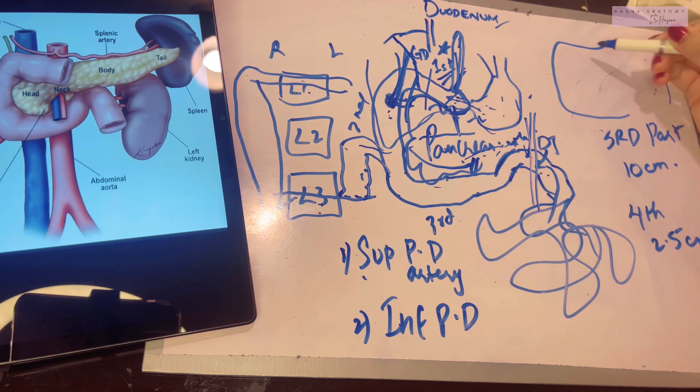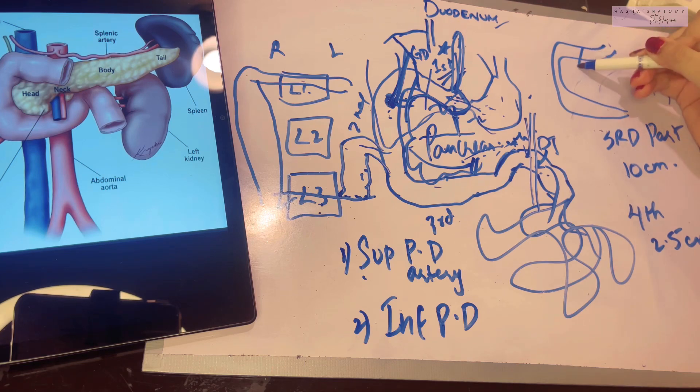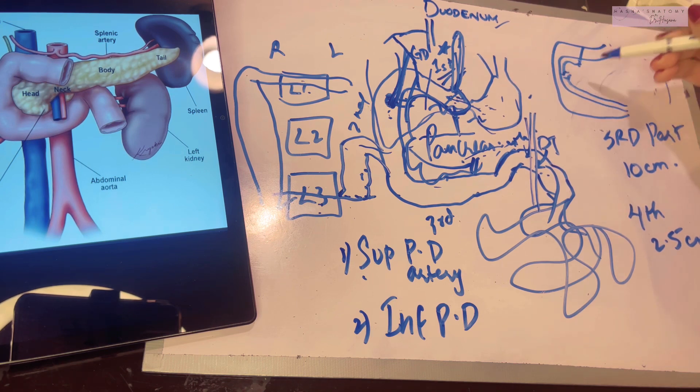Let's suppose this is the duodenum, the superior pancreaticoduodenal along with gastroduodenal giving supply to this part, and then inferior coming from inferior side, and these two anastomose with each other and supply pancreas as well as the duodenum.